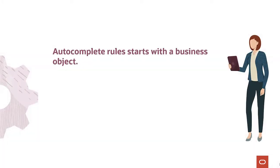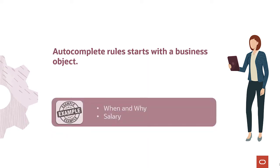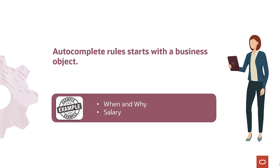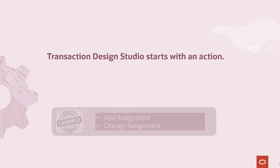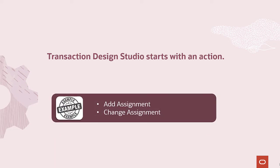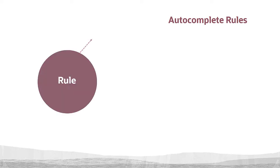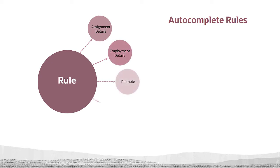Autocomplete Rules starts with a business object, such as the When and Why or Salary business objects. Transaction Design Studio, on the other hand, is purely UI driven and starts with an action or flow, such as the Add Assignment or Change Assignment flows. A business object can be initiated at different places in the responsive UI and has a strong correlation to a specific section in an action.